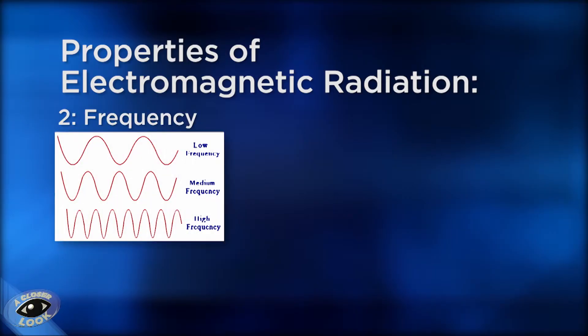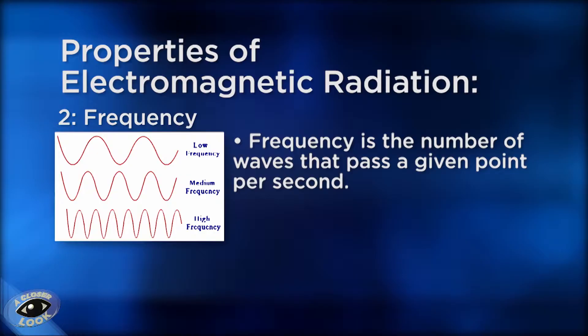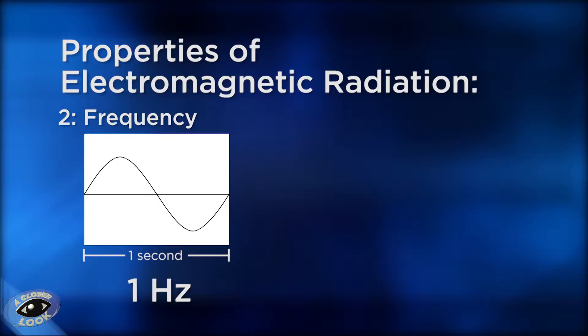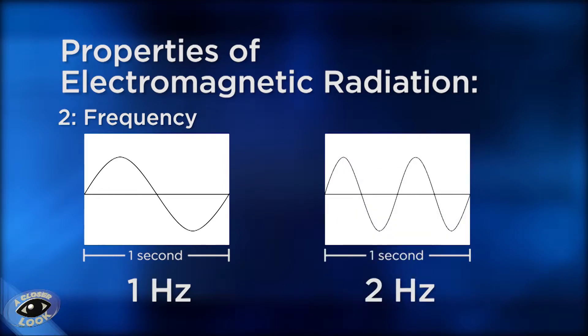The second property of electromagnetic radiation is frequency, which indicates how many waves pass a given point per second. We want to measure frequency in hertz, which is also sometimes reported as seconds to the negative one power. Hertz and seconds to the negative one power mean the same thing. A wave with a frequency of one hertz means one wave will pass a given point per second; two hertz means two waves per second, and so on.